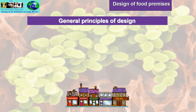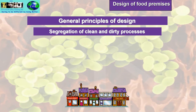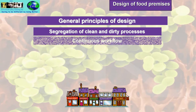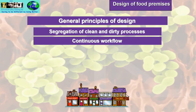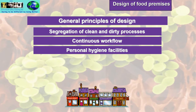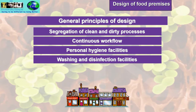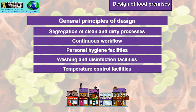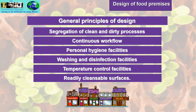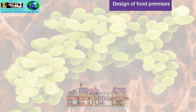Design of food premises: the general principles of design are that there must be segregation of clean and dirty processes, continuous workflow, personal hygiene facilities, washing and disinfection facilities, temperature control facilities, and readily cleansable surfaces.